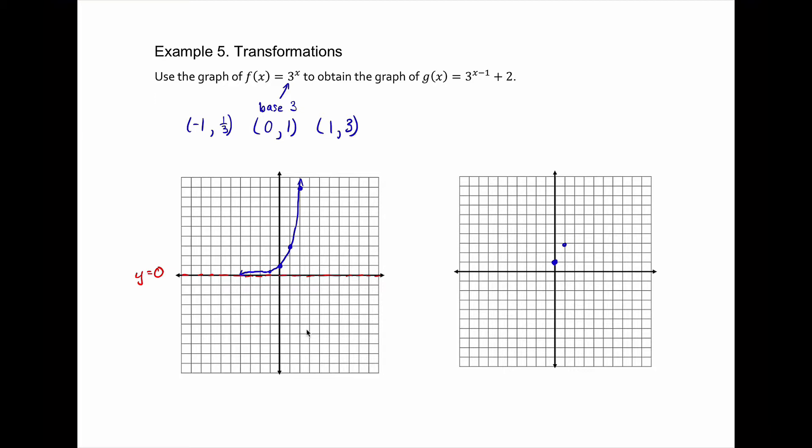So the first thing I'm going to do is deal with whatever's in there with the variable. In this case, it's a negative 1. And then since it's negative with the x, it is going to be going in a positive direction. So it's going to be right 1.